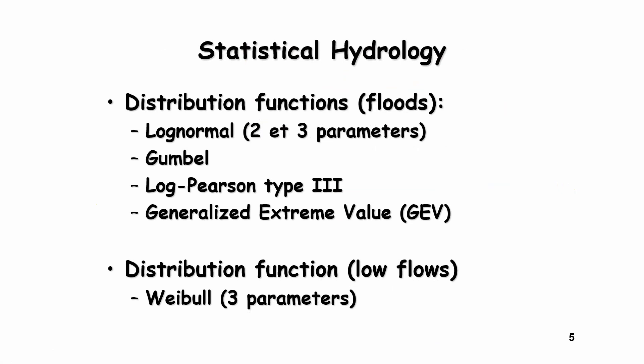Now, in statistical hydrology, there are distributions that we use for floods, but there are also distributions that we use for low flows. In the case of floods, we can use the two parameter log normal distribution, which will be the case here. But you can also use the three parameter log normal distribution, the Gumbel distribution, the log Pearson type 3. And one of the distributions which has been used very much in recent years is the generalized extreme value distribution, or also called the GEV distribution. For low flows, we generally use the three parameter Weibull distribution.